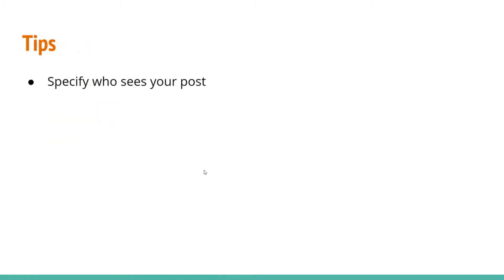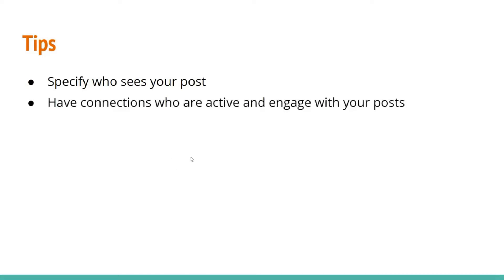A few tips: when you post, you can specify a subset of your connections to see that post. For example, if you have HR, dance, and yoga connections, you can create a group of yoga connections and post only to them. LinkedIn allows you to create that subset when you post. Also, have connections who are active and engage with your posts.